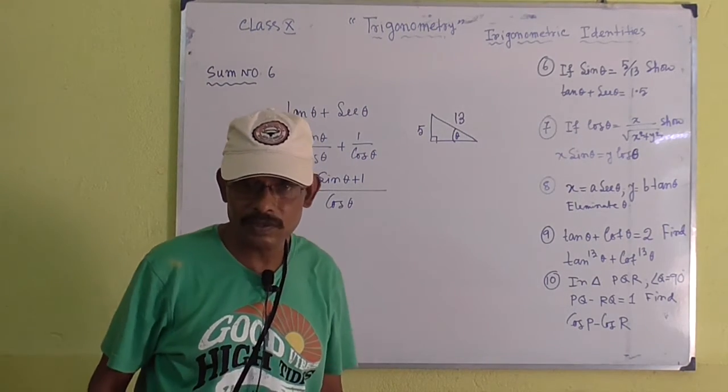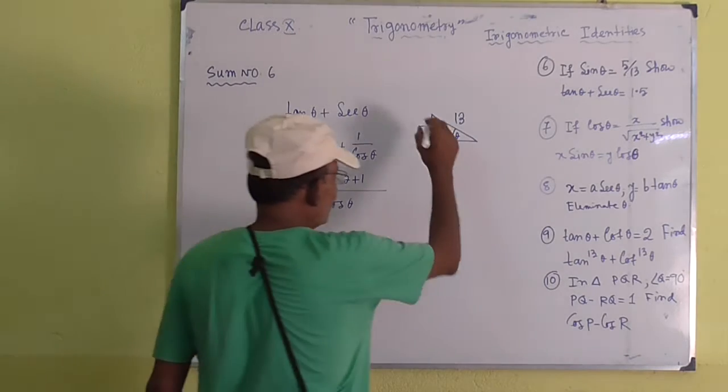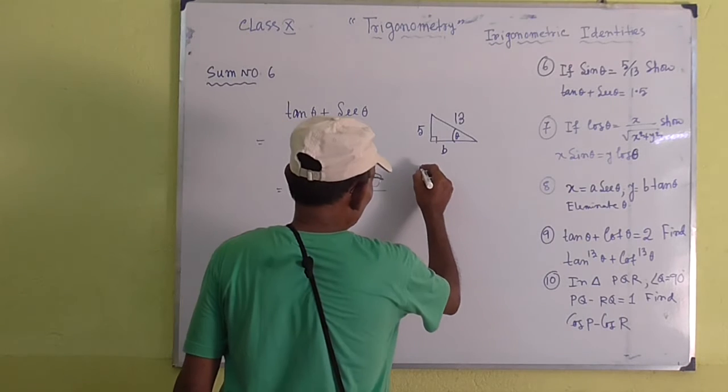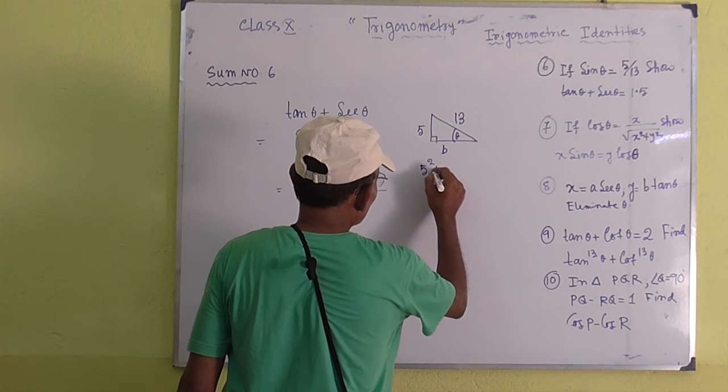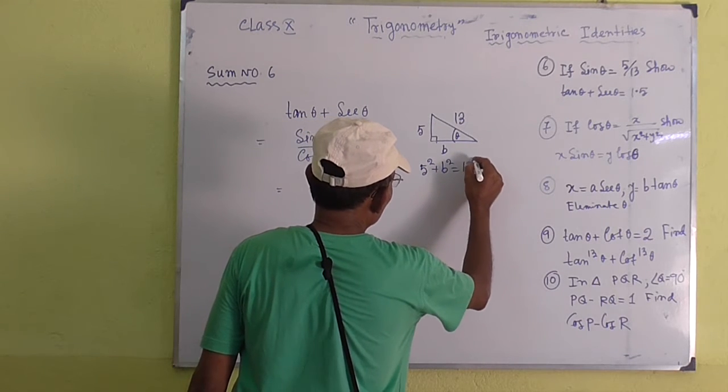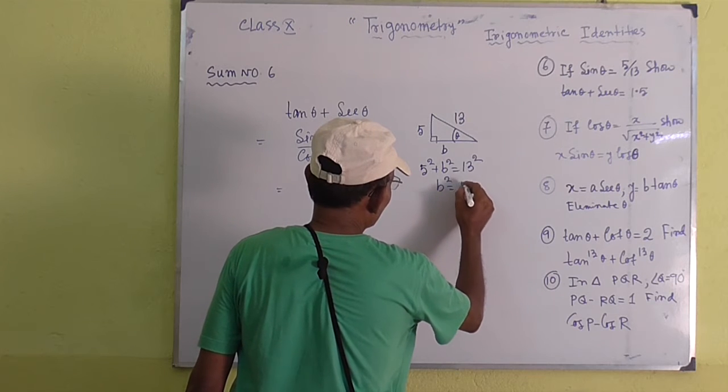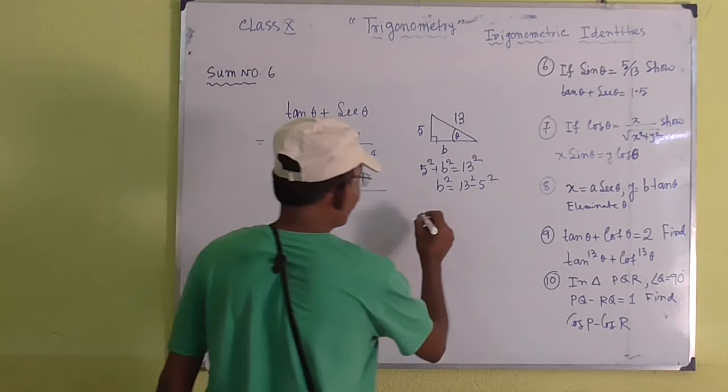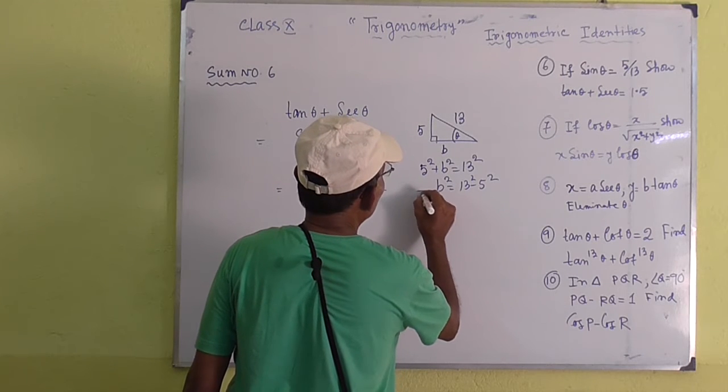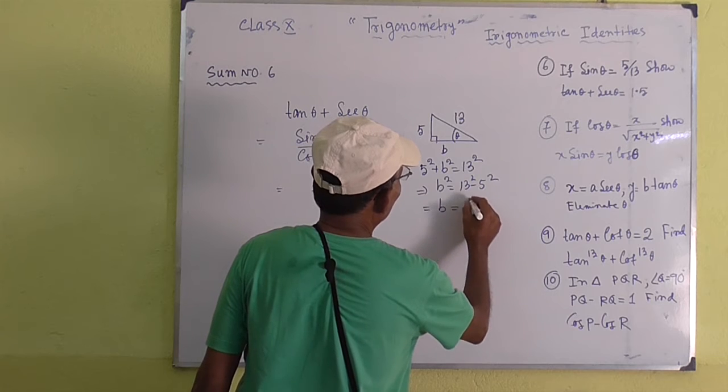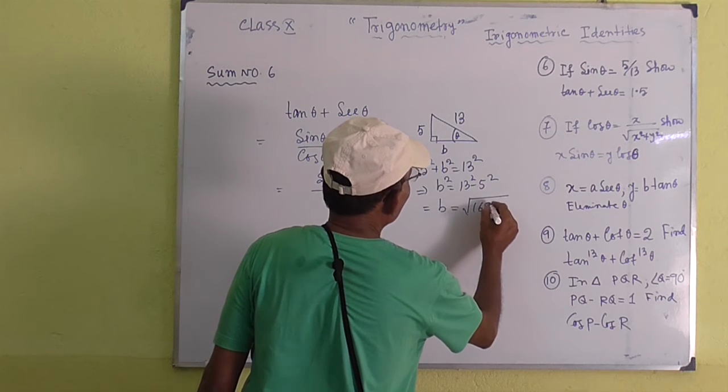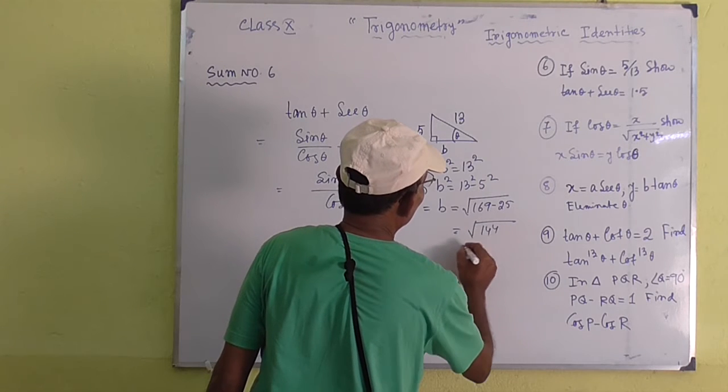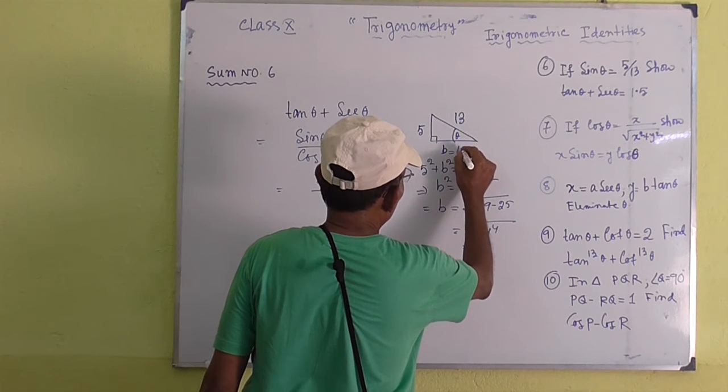Perpendicular is 5 and hypotenuse is 13. So with the help of the Pythagoras theorem, we must find the value of the base. We know that perpendicular square plus base square equals 13 square. So base equals root over 169 minus 25, that means 144. So base will be 12.